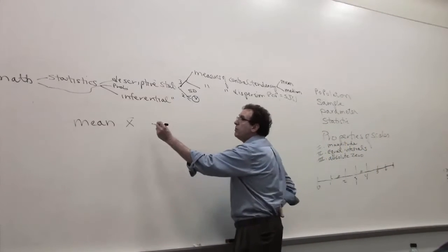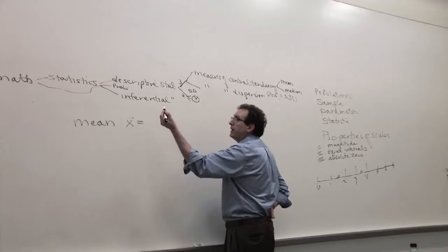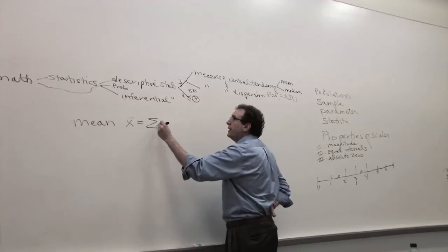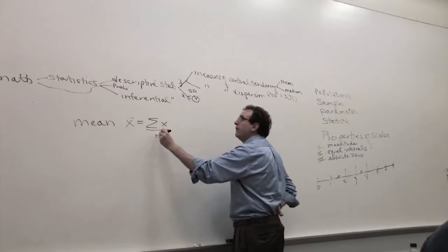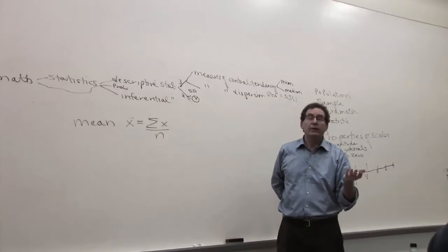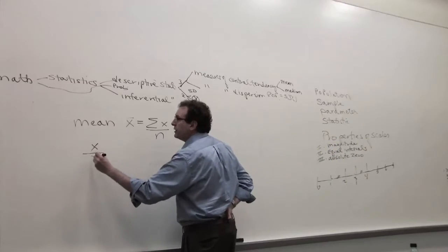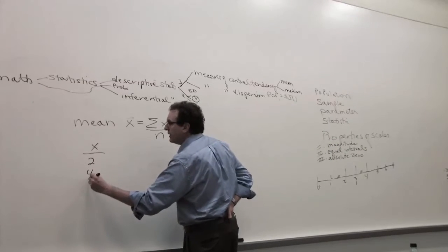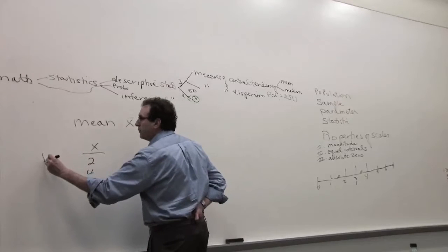And the formula for the mean, which everybody knows from back in the fifth grade, sixth grade, you add together all the numbers and divide by the number of numbers. So let's take a really small example, x equals 2, 4, and 6, so the sample size is 3.